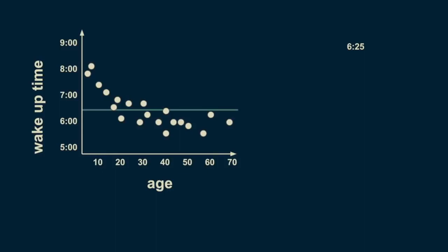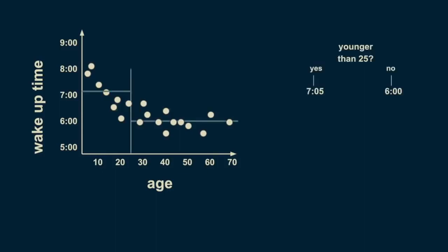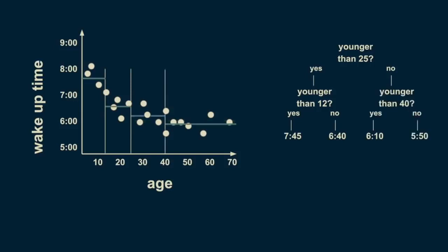A reasonable first split is at age 25. On average, people younger than 25 wake up at 7:05, and people older than 25 wake up at 6 o'clock. There's still a lot of variation in the younger group, so we can split it again. Now the people younger than 12 can be estimated to wake up at 7:45, and people between 12 and 25 can be estimated to wake up at 6:40. The over-25 group can be meaningfully subdivided too. Those between 25 and 40 wake up on average at 6:10, and those between 40 and 70 wake up on average at 5:50. By slicing again on age 8, we can refine the estimates to more closely fit the data.